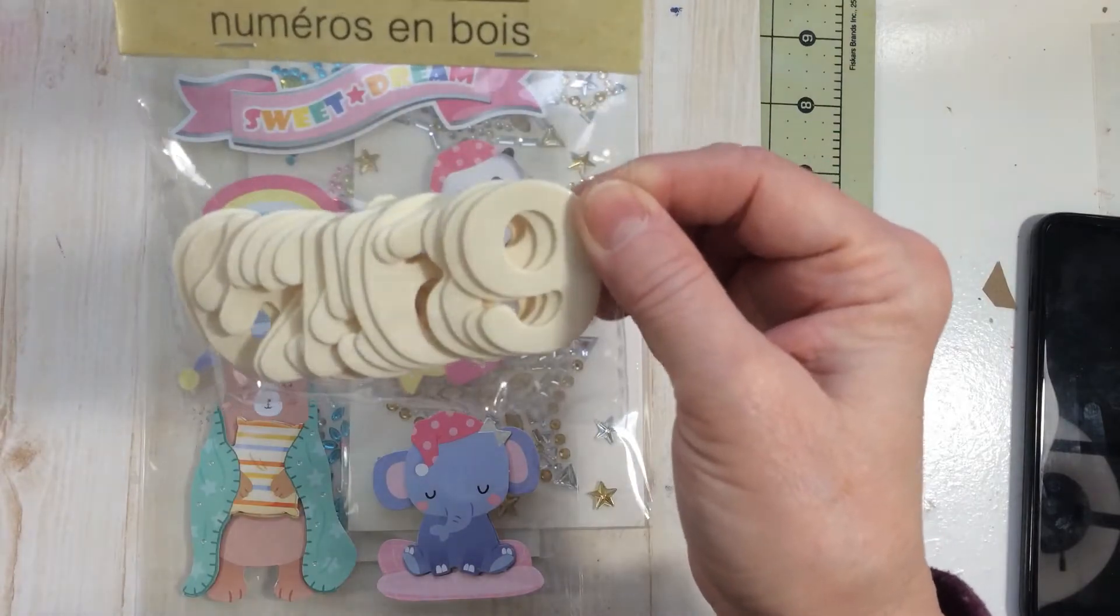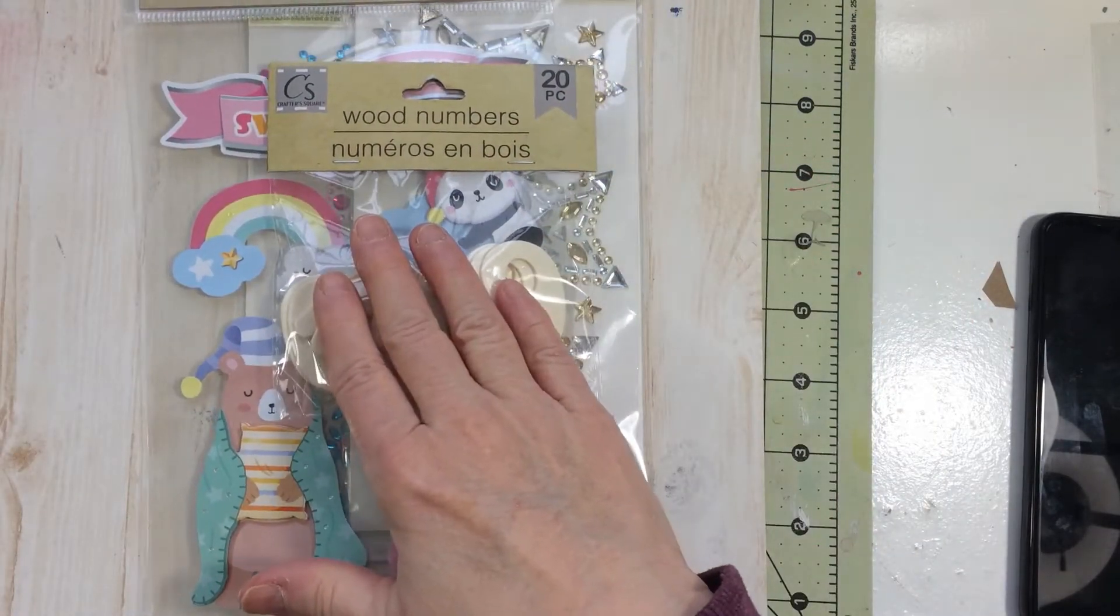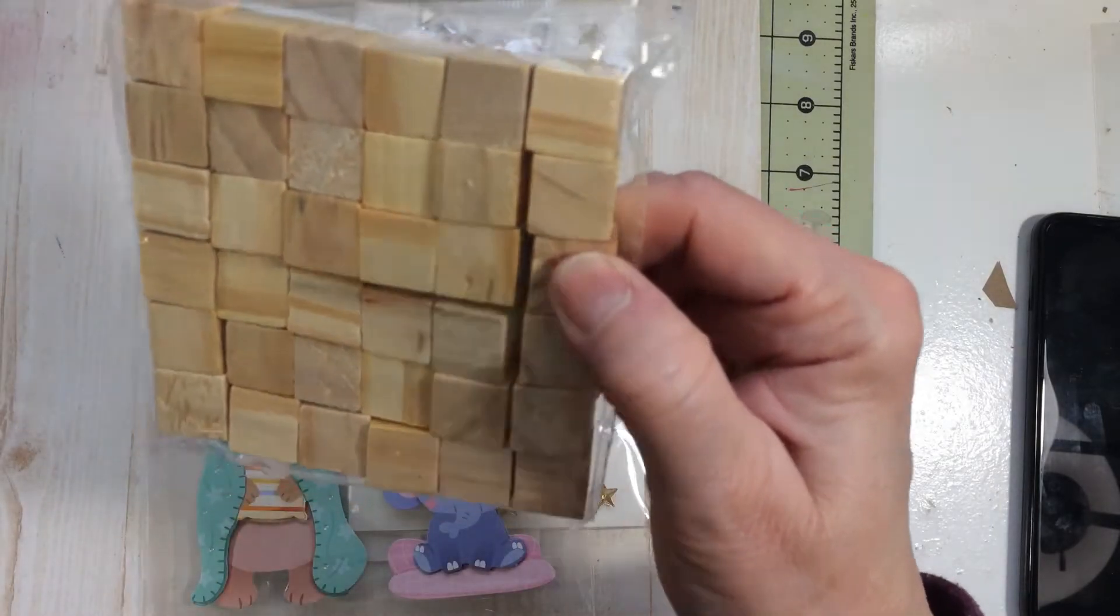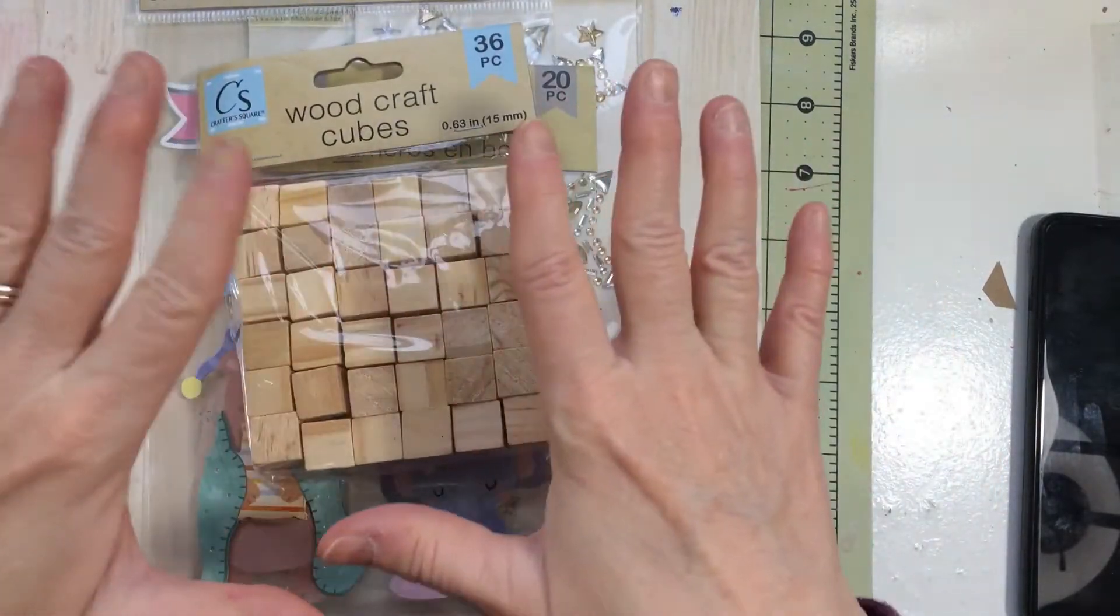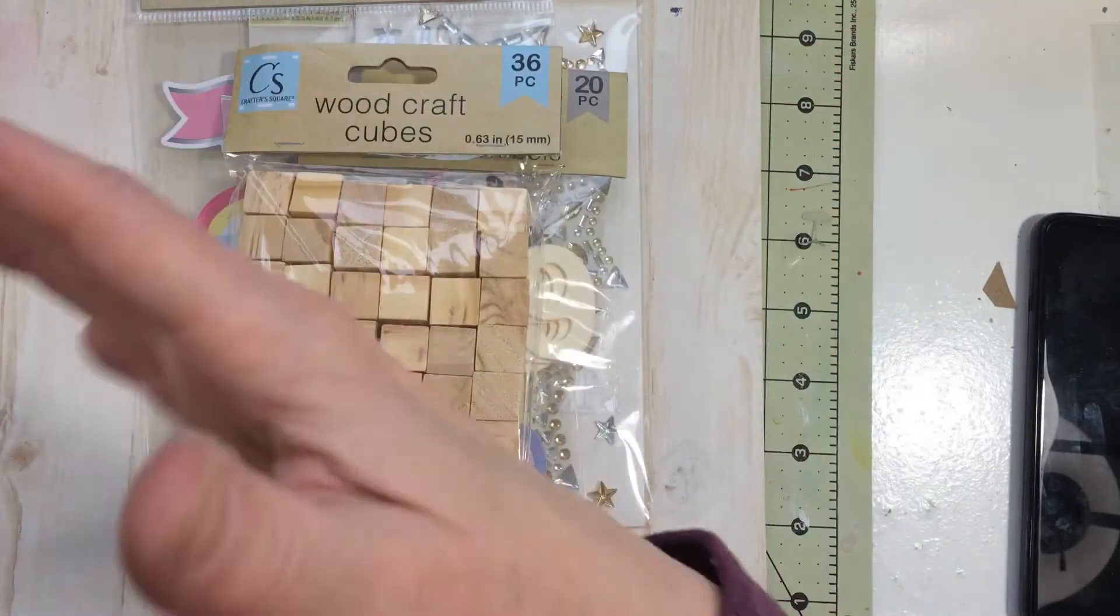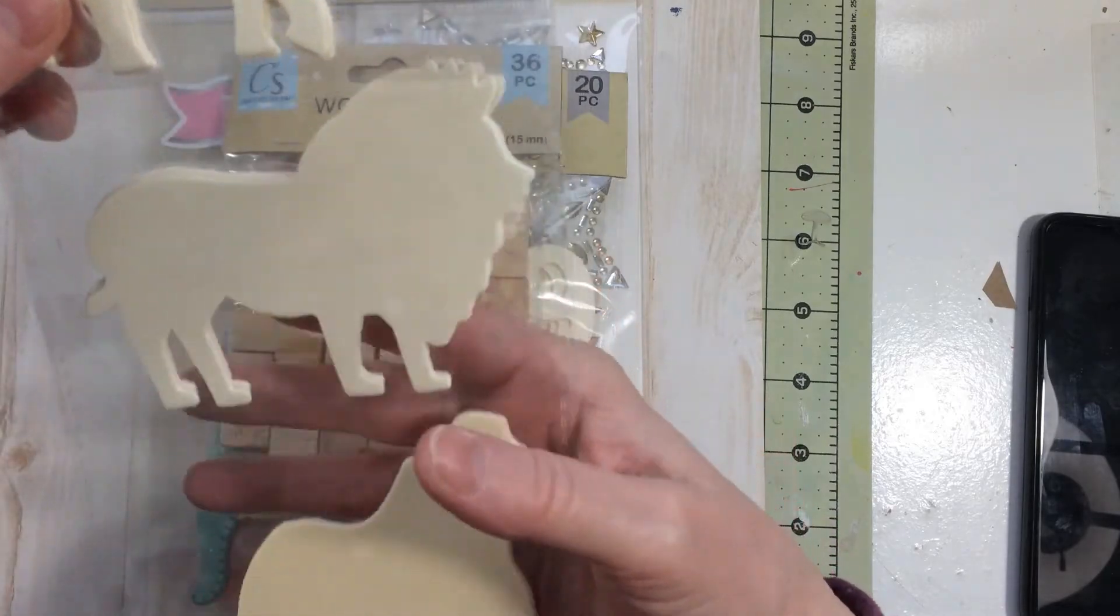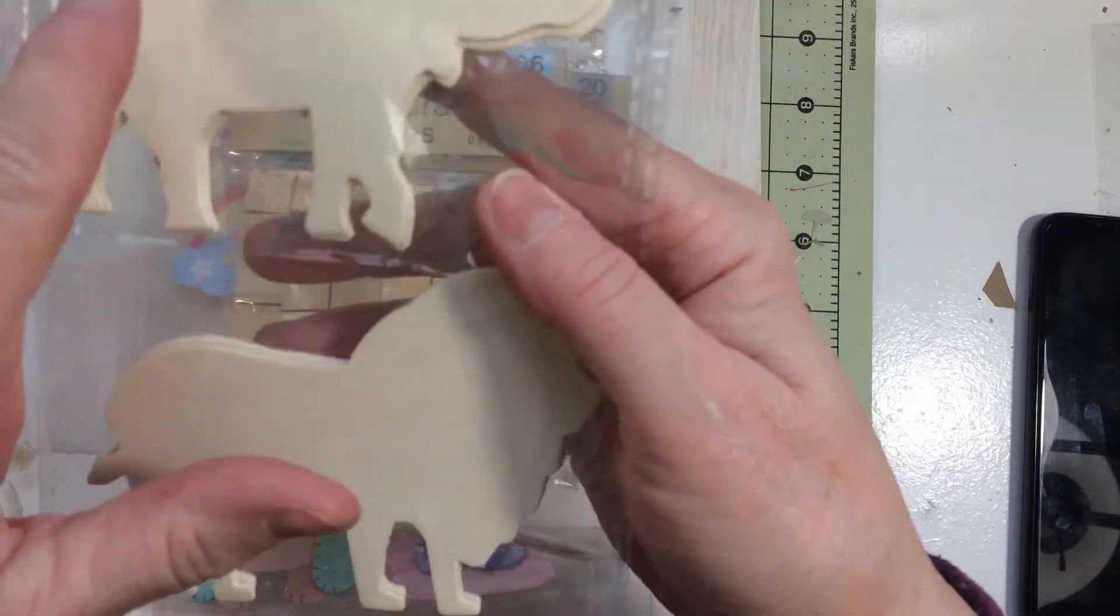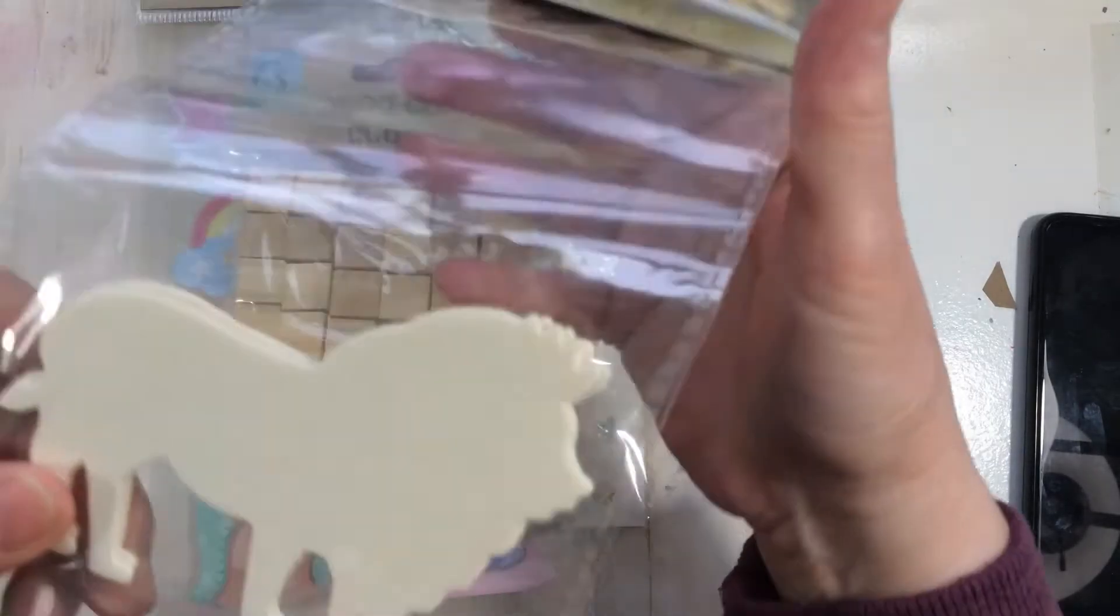He picked me up these wood letters or numbers from the Dollar Tree at the Crafter Square. Then he picked me up these, I had a set of these, now I have two sets. So now I am going to start to do something with these, make something out of those. He picked me up the wood cut of the animals, you get an elephant and you get a lion and a gorilla.